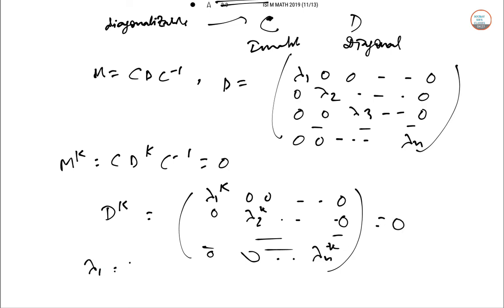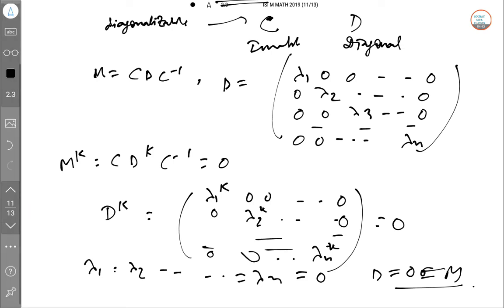So obviously from this we can say λ₁, λ₂, ..., λₙ = 0, therefore D = 0 and M = 0 also. That's it. So this is the end of question number 8. In the next video we will solve 9 and 10.